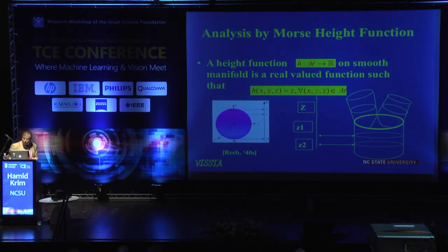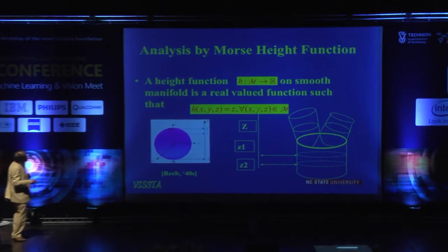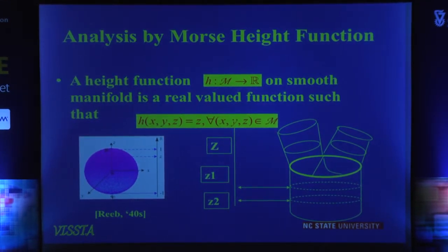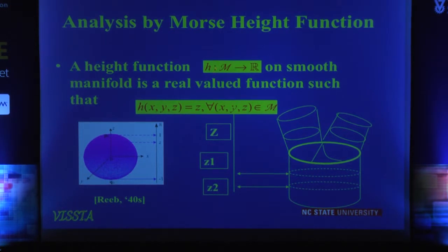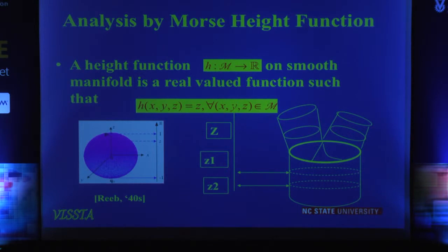So what is our viewpoint here? Our viewpoint goes back to the '30s. Morse was a mathematician from Harvard in the '30s who proposed the idea of defining a function on any manifold — as long as it's a nice manifold — and as long as you design this function nicely, going from the manifold to R, this function can reveal a lot of information about the manifold itself. What I'd like to remark is that we're interested in objects of arbitrary topology — if there are holes, et cetera, we want to be able to naturally capture them.